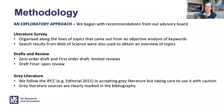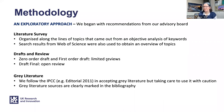On methodology, we've taken an exploratory approach. We began with recommendations from our advisory board and worked our way through the literature from there. The literature survey is organised around topics that came up from an objective analysis of keywords from different reports looking at sustainability and net zero issues. We had responses to our first-order draft and then an open review to our final draft. We've included some grey literature as well as peer-reviewed evidence, following guidelines set up by the IPCC. In the bibliography, the grey literature is clearly marked.